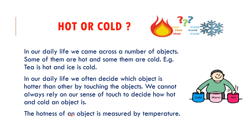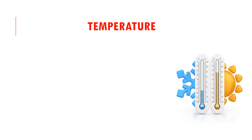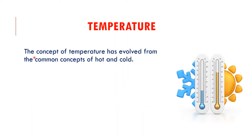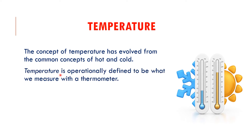But if we precisely want to know how hot an object is, that is measured by temperature. Temperature is operationally defined to be what we measure with a thermometer. If we want to say precisely how hot or how cold an object is, we have to mention its temperature, and we measure temperature with the help of a thermometer.